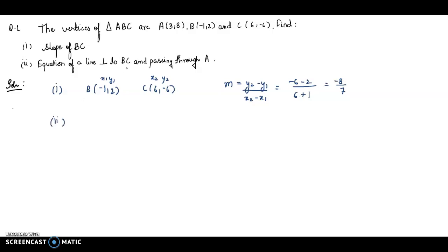Now second part is equation of a line perpendicular to BC and passing through A. We found out the slope of BC, that is -8/7. M of BC, and we have to find out the equation of a line perpendicular to BC. M₁ is -8/7. For a perpendicular line, the condition is M₁ × M₂ = -1. So -8/7 multiply M₂ equals -1. I will get M₂ = 7/8.